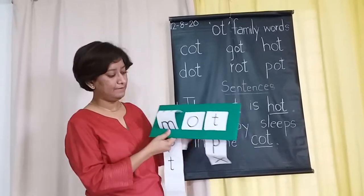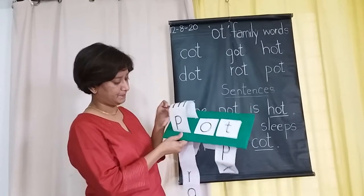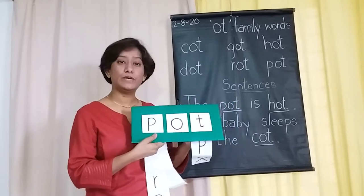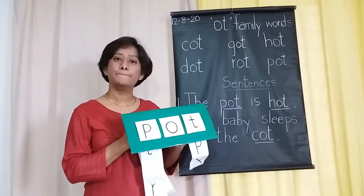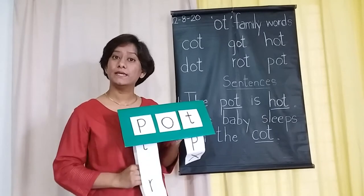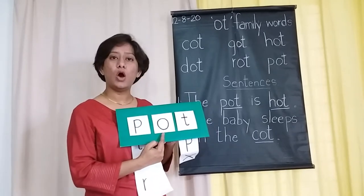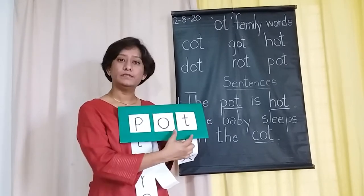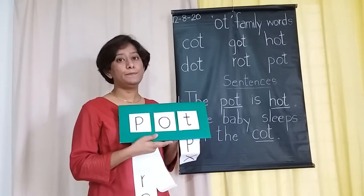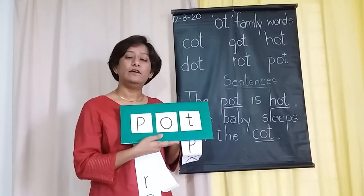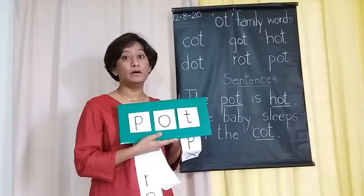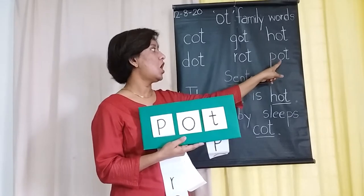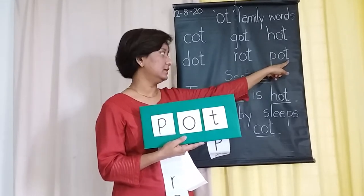This time we are going to add letter P. P says P. O says O. T says T. P, O, T — Pot. Pot is a utensil which we can use to make food. It can be made from earthenware or it can be metal. That's the next word — Pot.